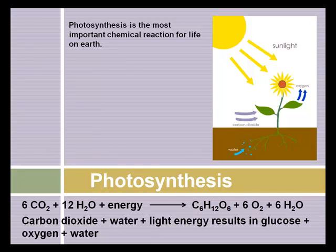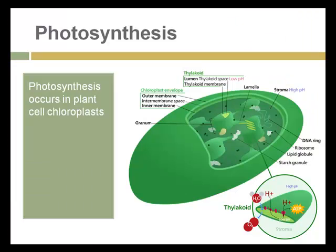Where does the plant get the water? It gets it mostly through its roots. Where does the plant get the carbon dioxide? Through its leaves. And how does it give up oxygen — the byproduct of water and oxygen — into the atmosphere? Again, through the leaves, through the process of respiration that we'll talk about next. Photosynthesis occurs in plant chloroplasts and critically inside a very small part of the chloroplasts called the thylakoid, where the actual exchange of water, oxygen, and energy through ATP occur.